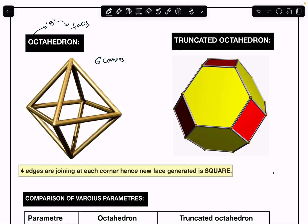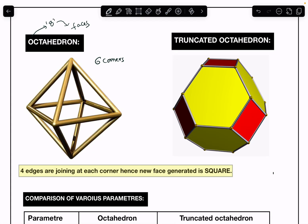Now let us find the number of edges. In a regular octahedron there are totally 12 edges. You can see: first, second, third, fourth, fifth, sixth, seventh, eighth, ninth, tenth, eleventh, and twelfth. So totally there are 12 edges in a regular octahedron.